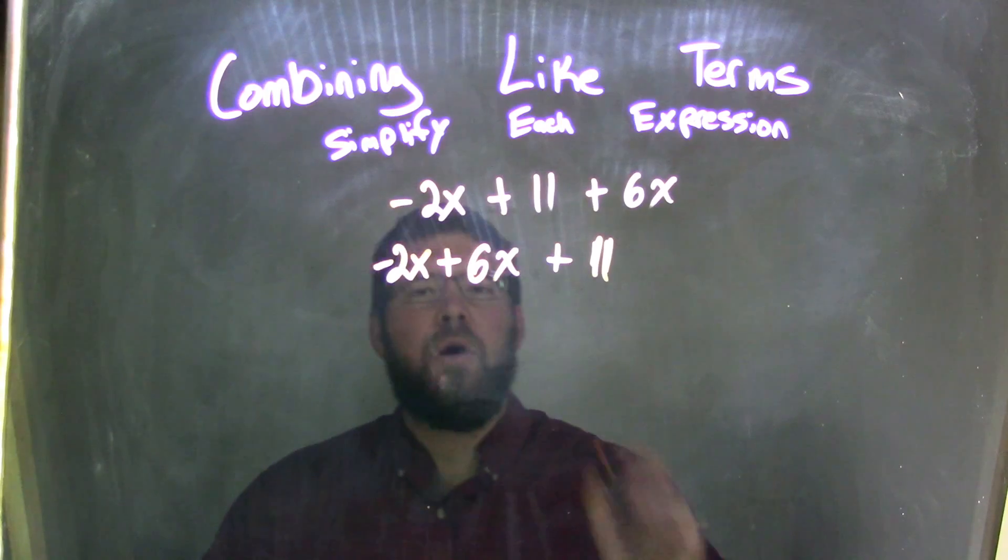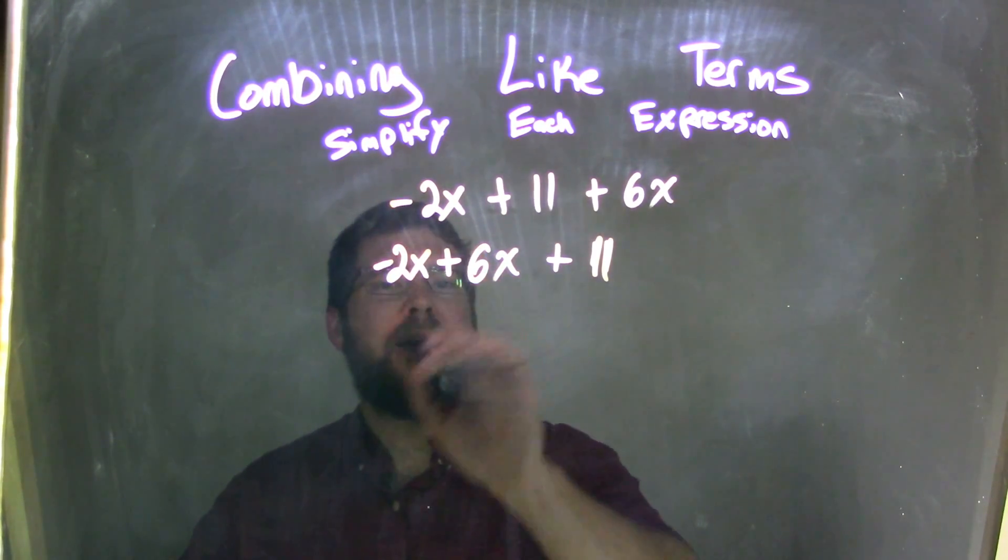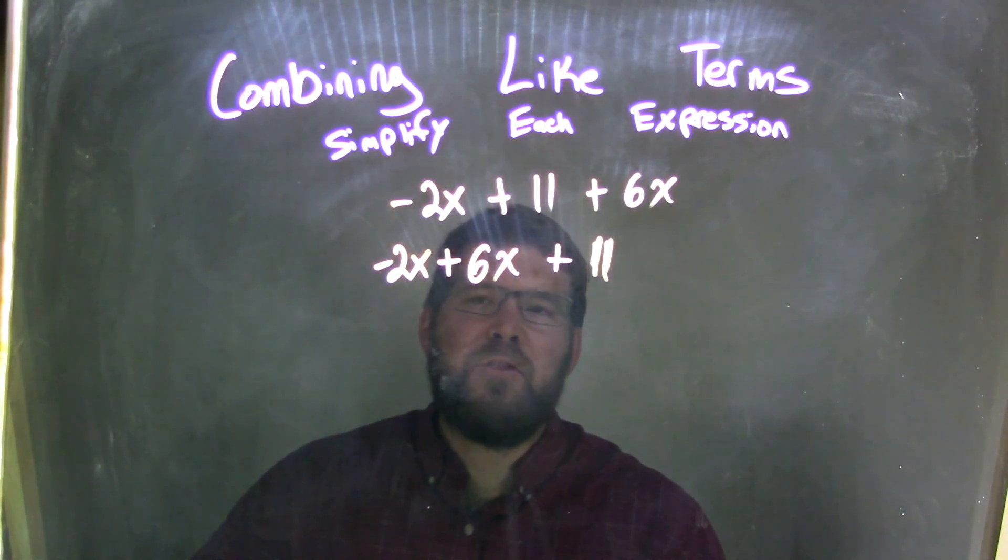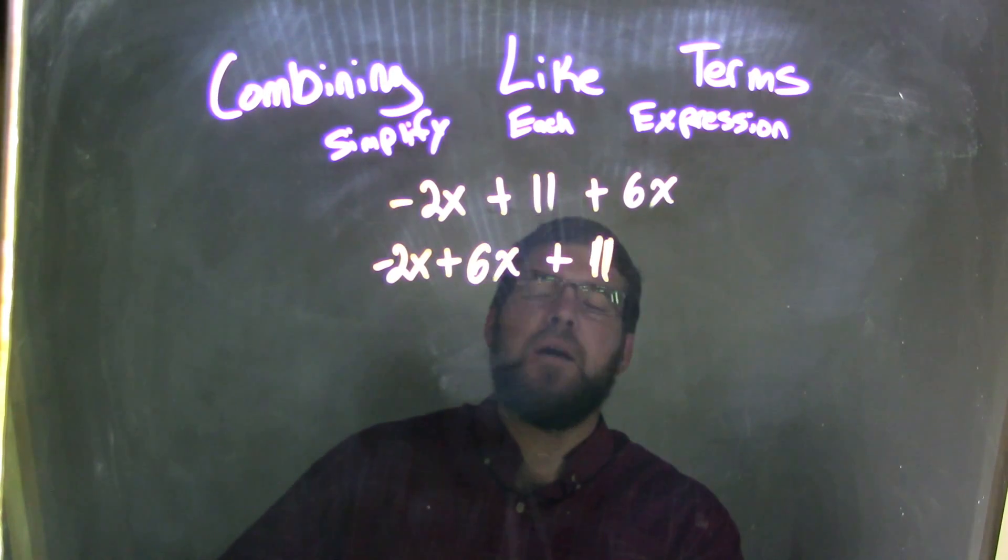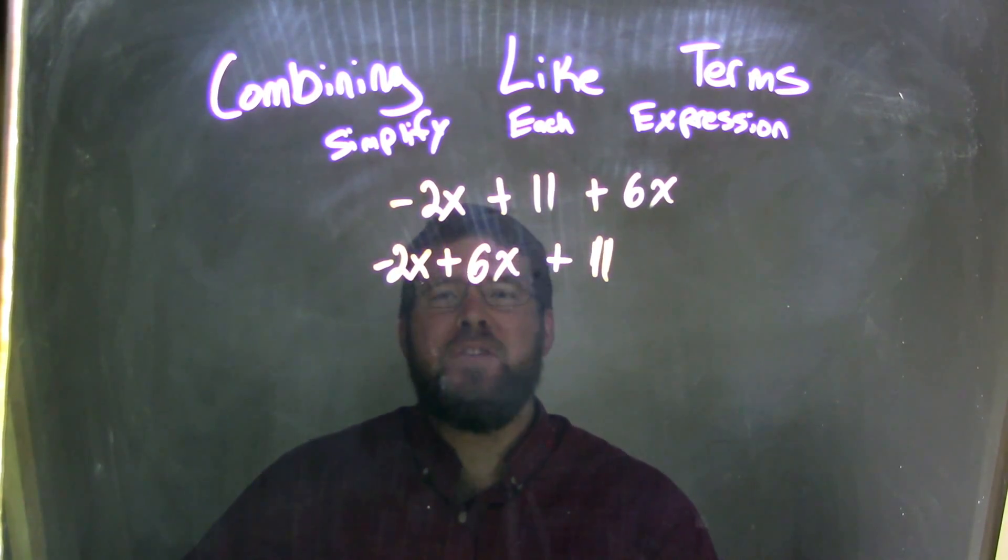So, now let's combine the like terms. Well, our variables, we can combine them. So, now we have negative 2x plus 6x. If we're good with this, we can realize that it's going to be 4x, alright, but it might not be easy for you to see.